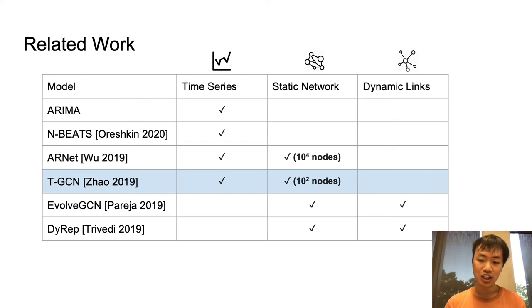Now, the problem with both ARNET and TTCN is that they do not work with dynamic graphs, where edges can appear and disappear over time. And they do not scale well to very large graphs. TTCN, for example, was tested only on a graph of a few hundred nodes, while ARNET was tested on a graph of 60,000 nodes.